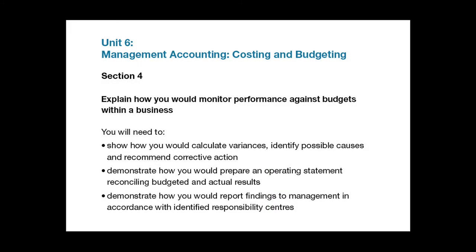Section 4: on bullet point 1, you will need to briefly describe the types of variances, what might cause them, and recommend action that will eliminate or minimise the variance. For example, if office equipment maintenance costs vary widely from month to month, then appropriate action might include staff usage training and/or renewal of equipment and/or a planned preventative maintenance schedule.